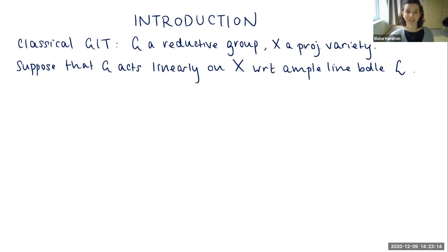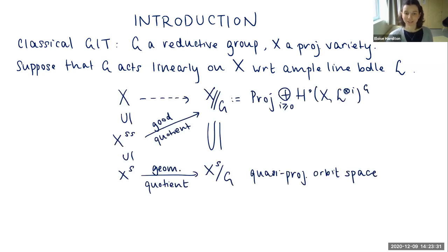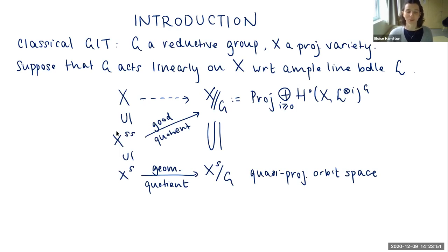In classical GIT, the setup is the following: we have a reductive group G and a projective variety X, and we suppose that G acts linearly on X with respect to some ample line bundle. The main result of GIT can be summarized as follows: the group being reductive ensures that the invariants are finitely generated, so we can take the projective variety associated to that and get a projective quotient. The inclusion of the invariants gives us a rational map from X, which restricts to a good quotient on the semi-stable locus, and further restricts to a geometric quotient on the stable locus.